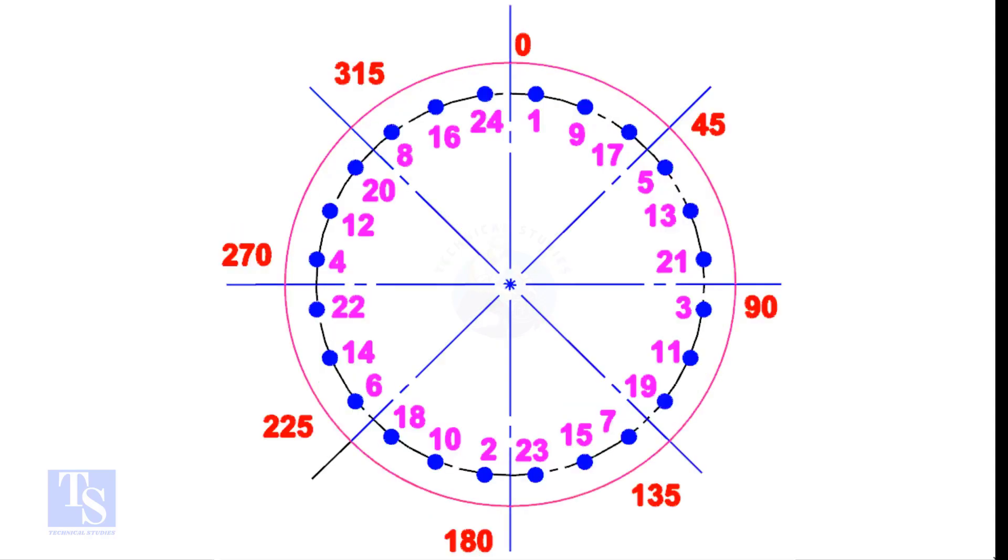For larger flanges, divide the bolts into 8 equal groups. Apply the same method. The difference between the two nearest holes will be 8.